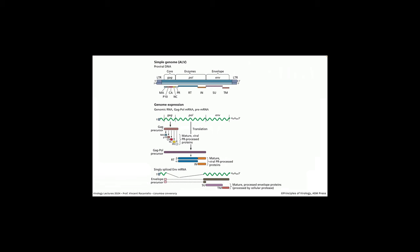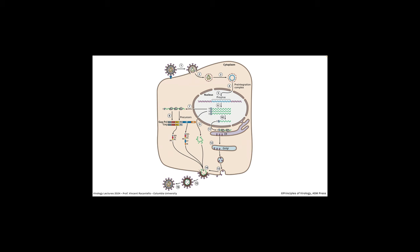The simplest retroviruses include three proteins: gag, pol, and envelope. Gag is the structural proteins that make up the capsid. Pol is the polymerase — the reverse transcriptase and integrase. Then there's the envelope protein. This DNA is transcribed to form an mRNA that's capped and polyadenylated, which is then translated to form viral proteins.